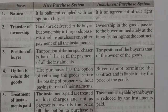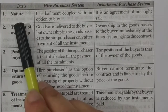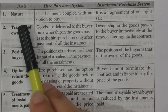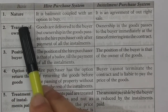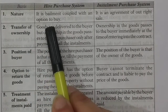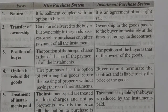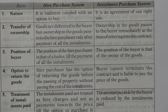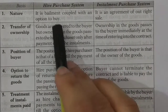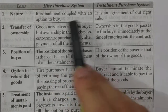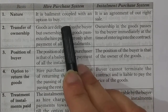The first basis of difference is nature. The hire purchase system is of the nature of a bailment, with an option to purchase included — meaning the customer can choose whether they really want to keep the goods.